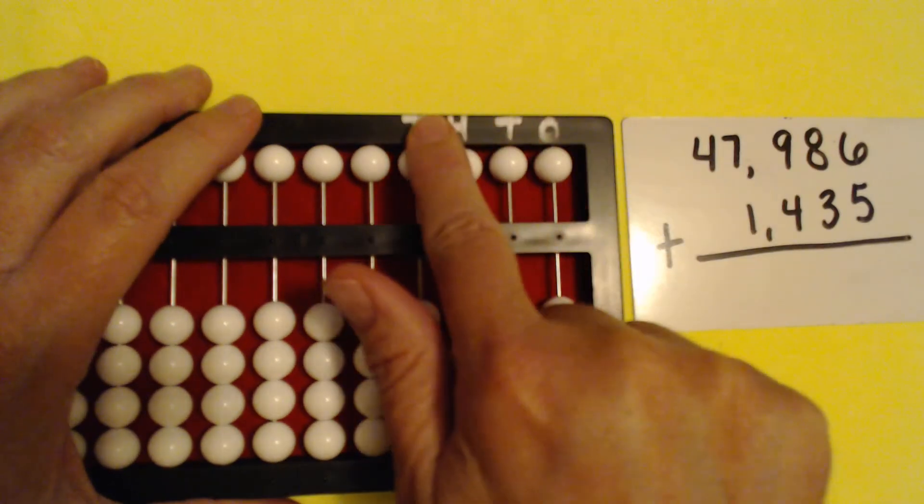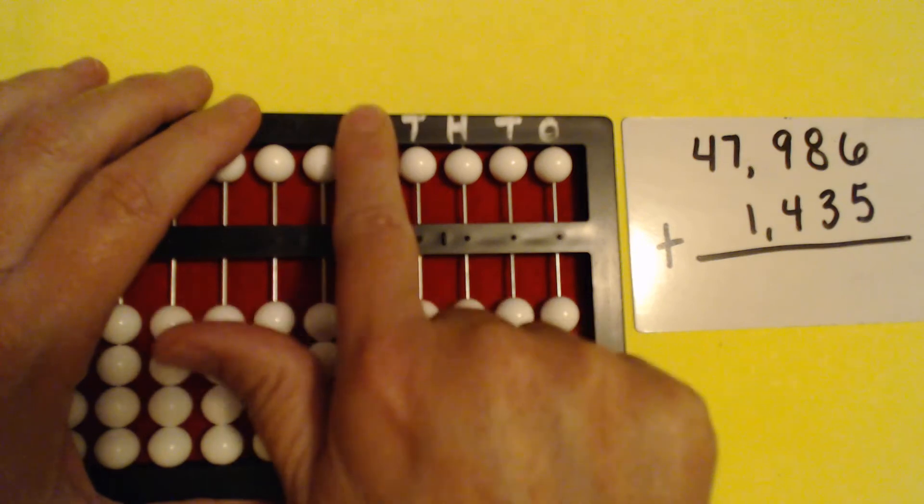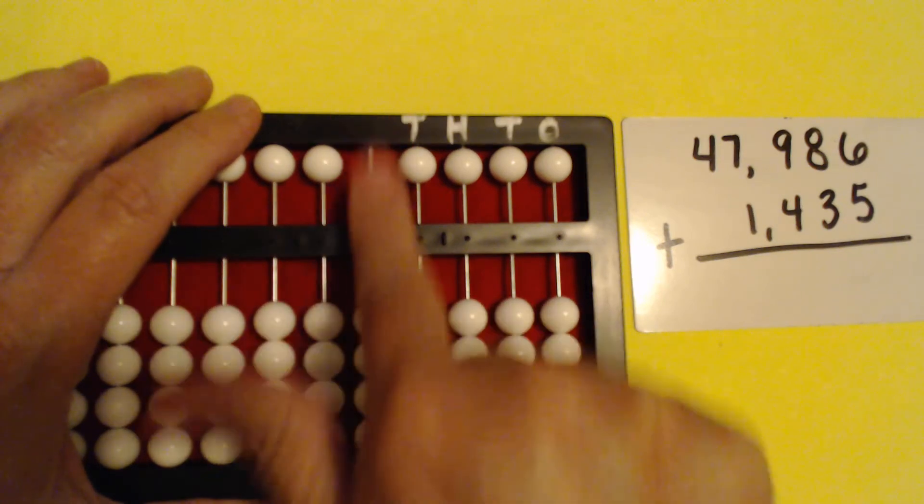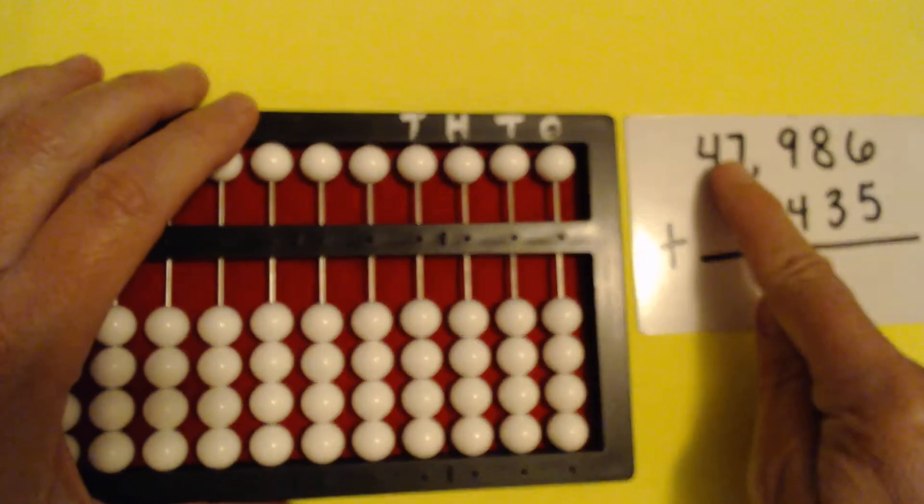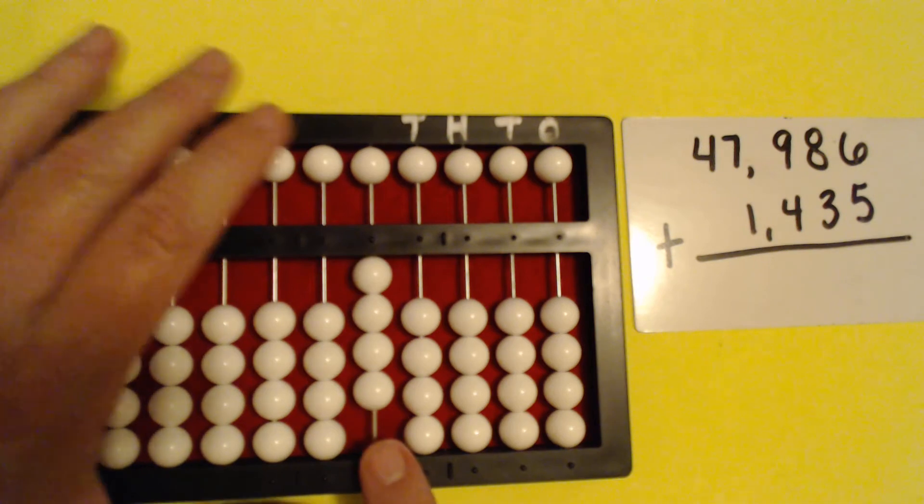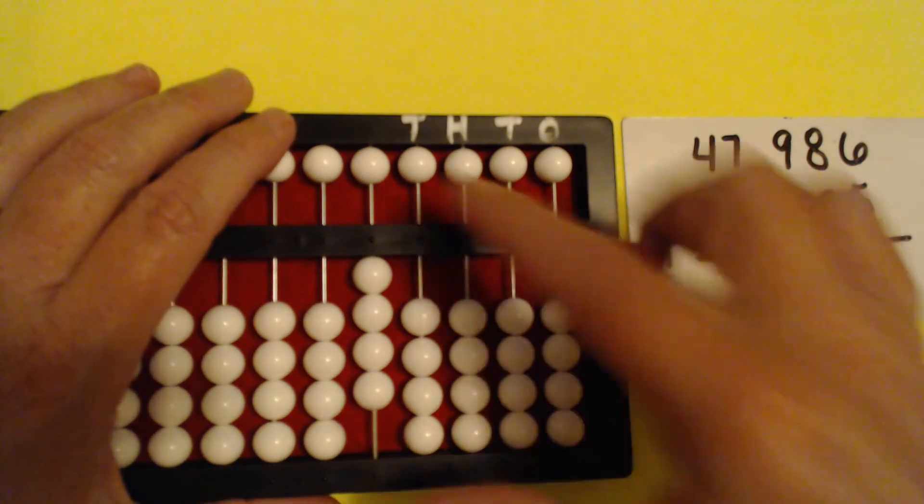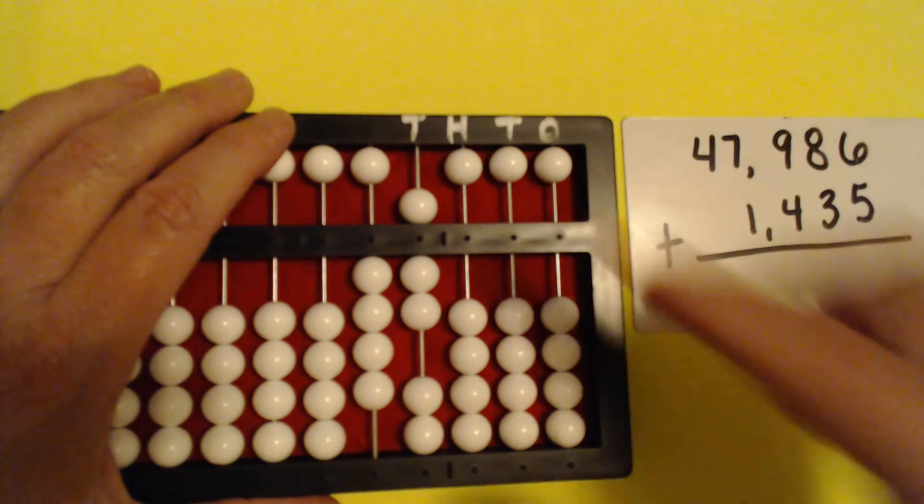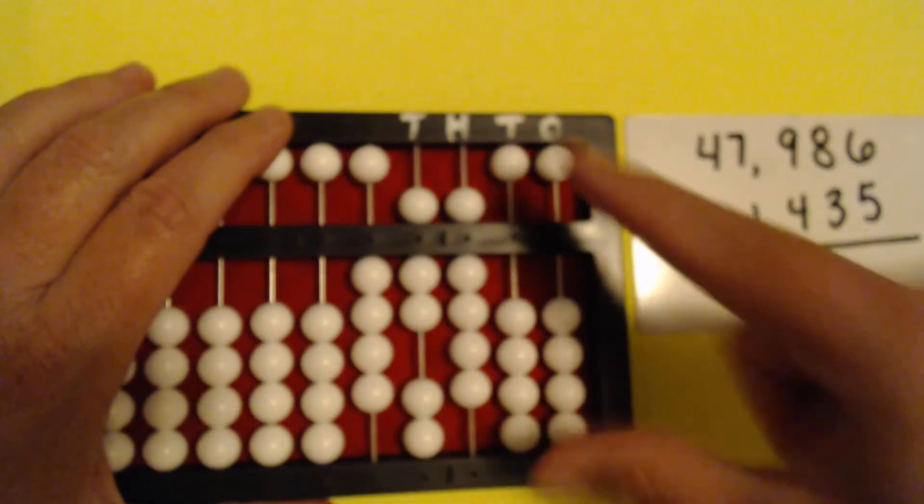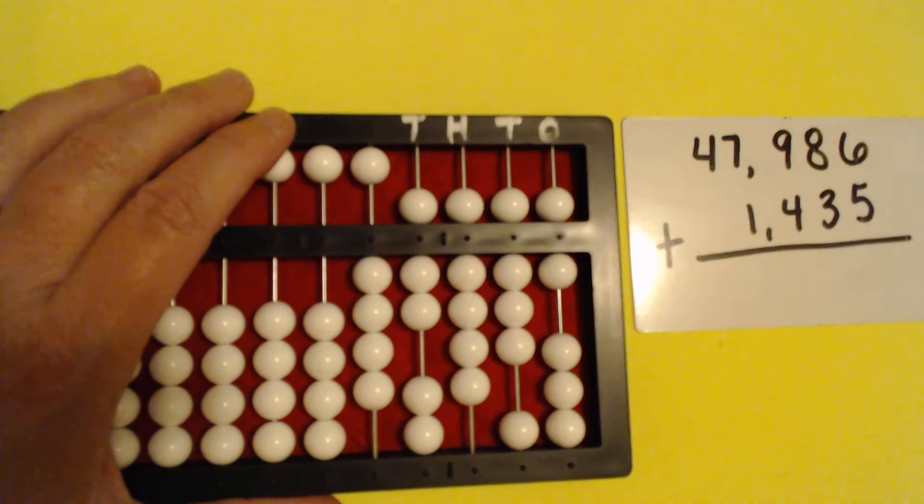Ones, tens, hundreds, thousands, ten thousands. I don't have it marked, but it is this column right here. So let's set a four in that column. Now we're going to set 7,986. So the first number is set.